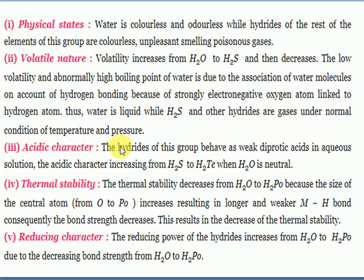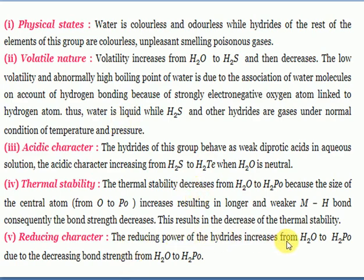Acidic (H₂S) character increases from oxygen to tellurium down the group. Water is a neutral molecule and has no acidic character; water is amphoteric. As bond strength decreases down the group, acidic character increases. Reducing power of the hydrides increases from H₂O to polonium hydride. When the metal-hydrogen bond is weak, it readily breaks and produces hydrogen atoms used for reduction.